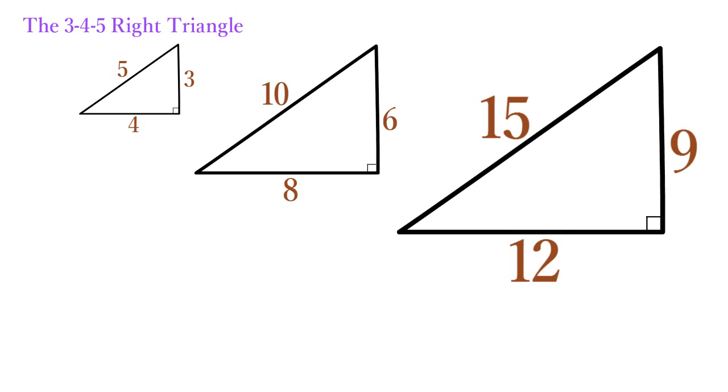In general, when you multiply the three sides of a 3-4-5 Right Triangle by any factor, the result is a similar right triangle whose corresponding sides are all increased in length by this factor.